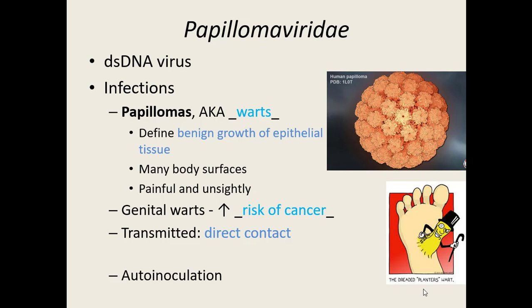They're transmitted by direct contact with the body or direct contact with an inanimate object that someone with a wart had contact with — for example, a shoe. If you had a wart on your foot, put on a shoe, and someone shared that same shoe right after, they can pick up this virus and have warts on the foot. You can also do auto-inoculation, meaning you can inoculate yourself repeatedly — if you have constant contact with a wart, you can have warts show up on other parts of the body.